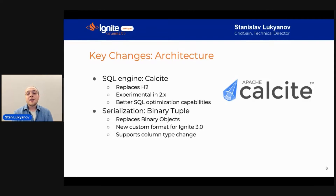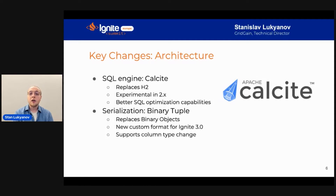Binary tuple replaces binary objects in Ignite 3 for serialization. Binary objects have a few flaws, but most commonly seen is that they don't allow changing column types. To change column types in Ignite today, you need various workarounds. In Ignite 3, this will be made possible because of the new serialization format.